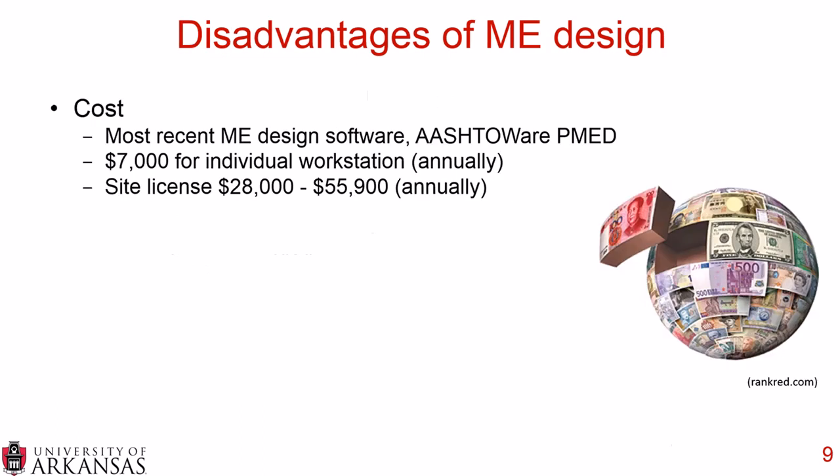However, there are some disadvantages. Number one is the cost. The most recent ME design software — you'll see many different terms out there: Pavement ME, MEPDG, AASHTOWARE PMED — it is $7,000 for an individual workstation annually, and a site license for multiple workstations is anywhere from $28,000 to almost $56,000 annually. So there is a significant cost associated with ME design.